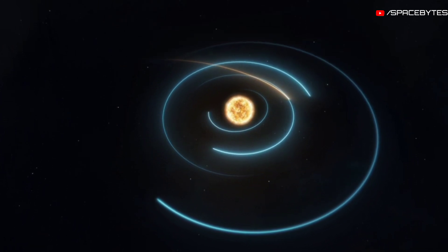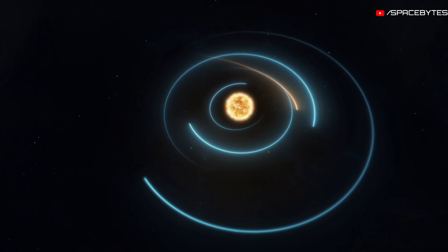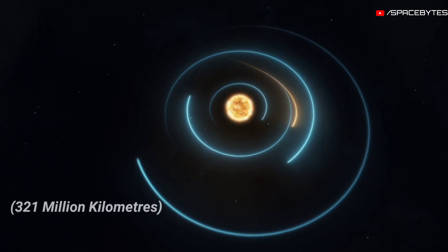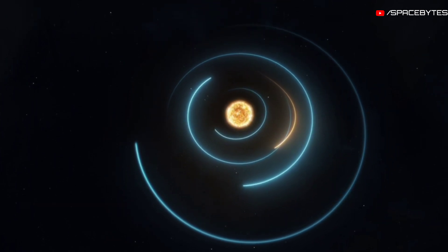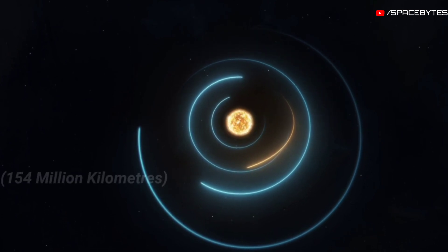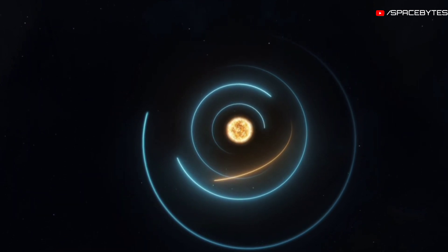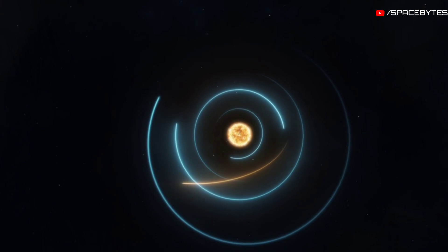At this time, the asteroid moves away from the Sun at a maximum distance of 321 million kilometers and approaches it at a minimum distance of 154 million kilometers, and its size is estimated at 92 feet.